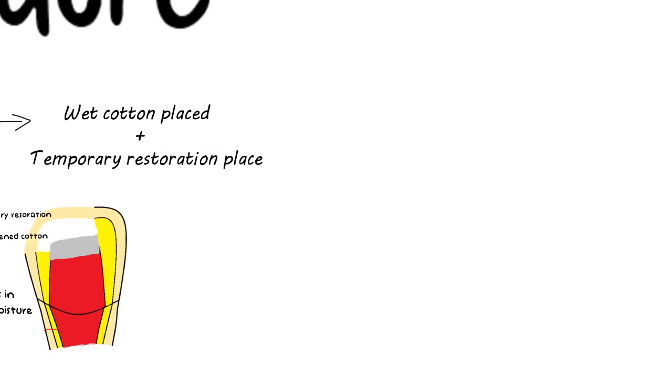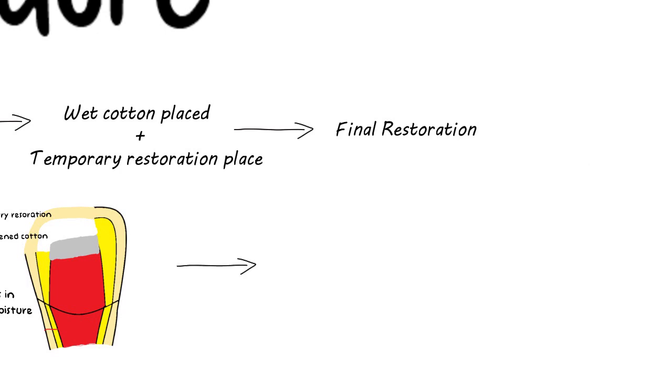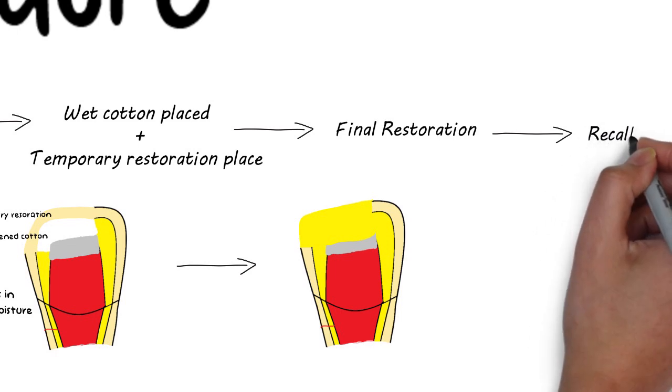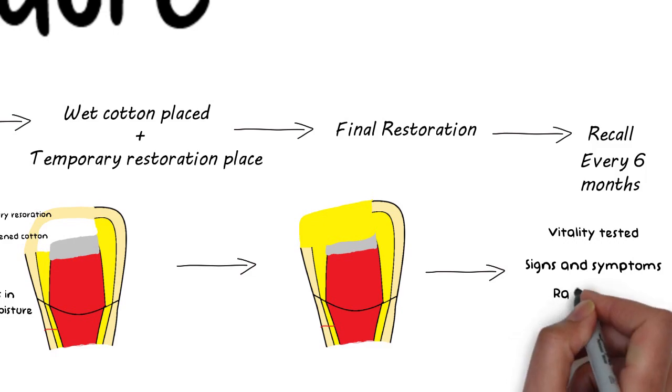After the MTA has set, the final restoration can be placed. The patient should be recalled every 6 months. At every visit, the pulp vitality is tested, signs and symptoms are observed, and radiographs are taken to observe the continued root development.